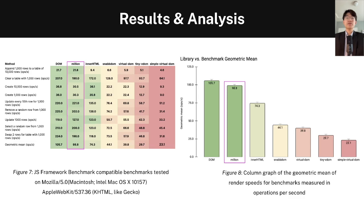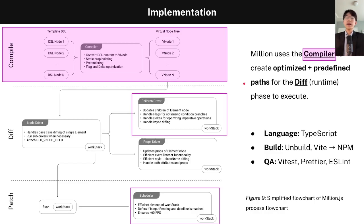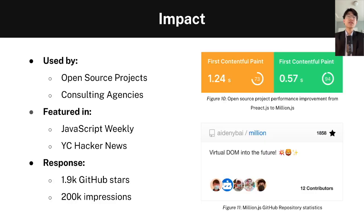Because of its robust methodology and design principles, Million sports exceptional performance. As you can see in this benchmark, when compared to other Virtual DOM libraries, Million has much better performance. As highlighted in the pink visualization to the right, Million is 133 to 300% better than current Virtual DOM libraries. The main difference is that Million uses a compiler, allowing it to optimize for both render speed and load time.